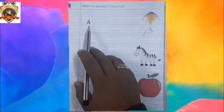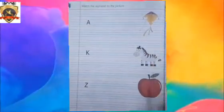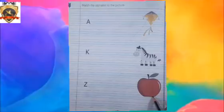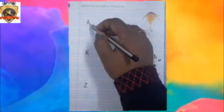First alphabet is A. A for kite? No. A for zebra? No. A for apple? Yes. We will match the letter A to the picture, apple.